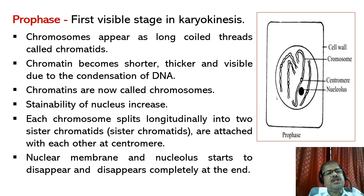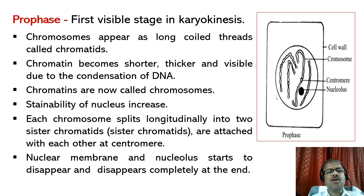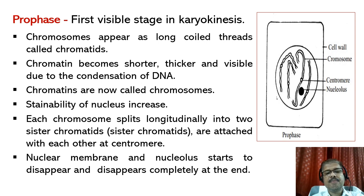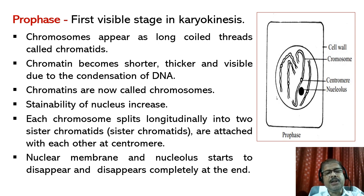Important characteristic features of prophase: it is the first visible stage in karyokinesis. The chromosomes appear as long coiled threads called chromatids. The chromatin becomes shorter, thicker, and visible due to condensation of DNA — the chromatids are now called chromosomes. Stainability of the nucleus increases. Each chromosome starts to split longitudinally into two sister chromatids, which are attached to each other at the centromere. The nuclear membrane and nucleolus start to disappear and by the end are completely gone.